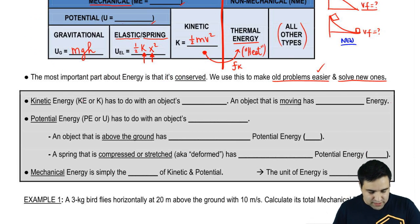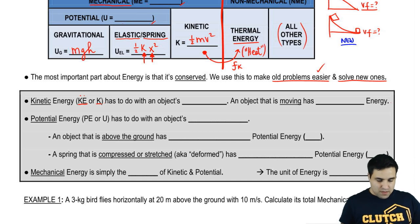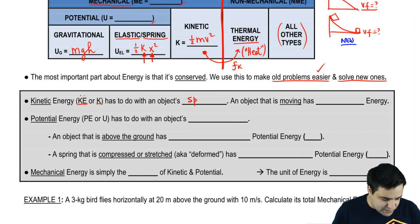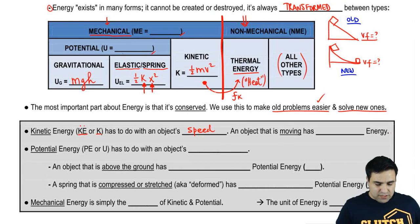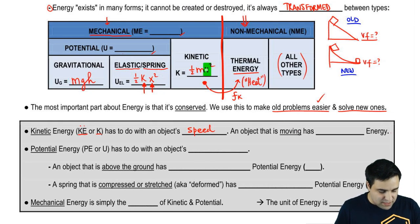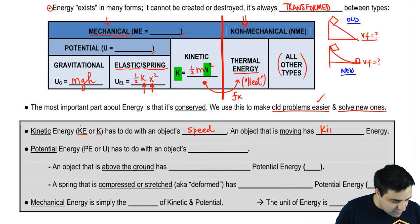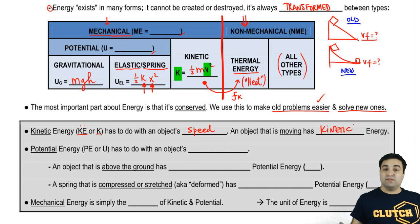So let's talk a little bit more about the types of energy that we care about the most, which are these over here. Kinetic energy is represented by KE, kinetic energy, or simply K. It's an uppercase K. It has to do with an object's velocity, or more specifically, actually, speed. Look at the equation here for kinetic energy, half mv squared. An object that is moving has obviously a velocity, and if you have a velocity, you have a kinetic energy. That's it. If you have a velocity, you have a kinetic energy.